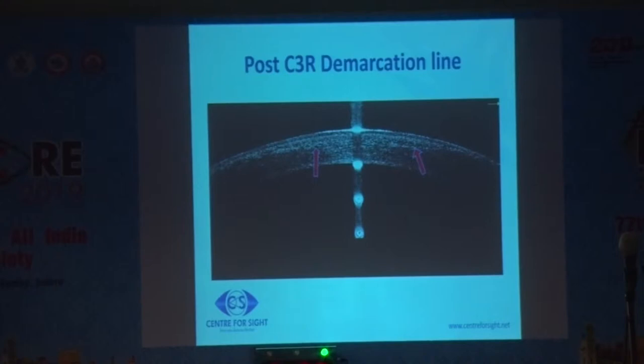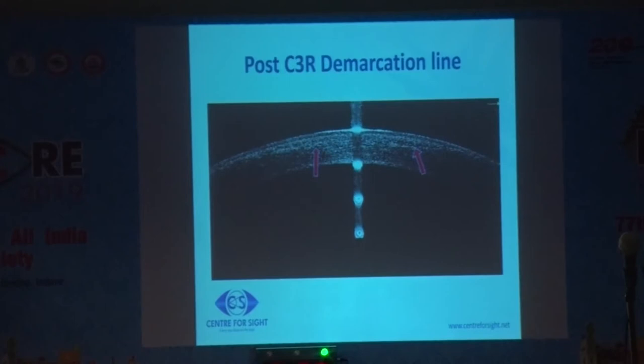This is how we see the demarcation line post-corneal collagen cross-linking. It is a direct clinical sign and the depth of the demarcation line is related to the effectiveness of the treatment. So this is again a very useful indication of AS OCT.